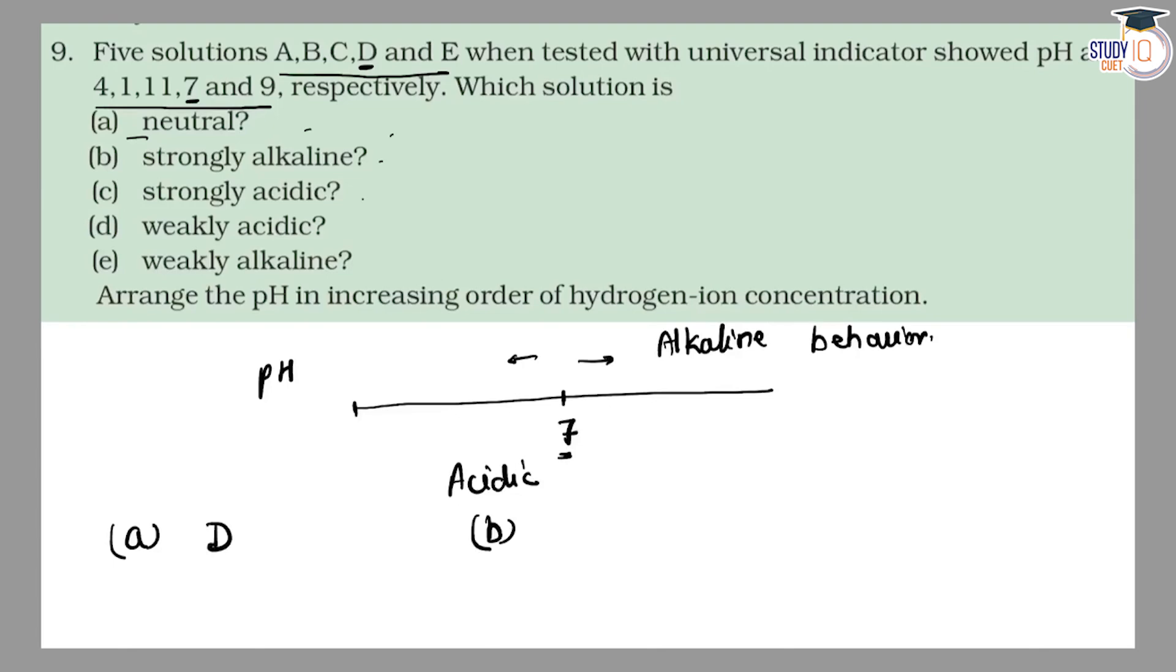Next, part B. Strongly alkaline. Strongly alkaline means it will be much greater than 7. Now, numbers are 1, 4, 11, 7, and 9. So let's put them here. 1, 4, 7, 11 and 9.